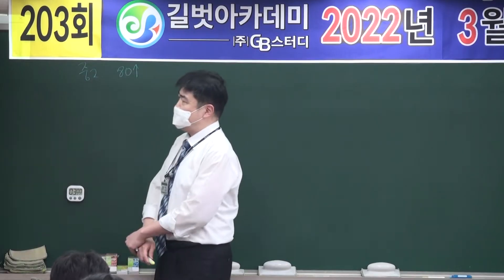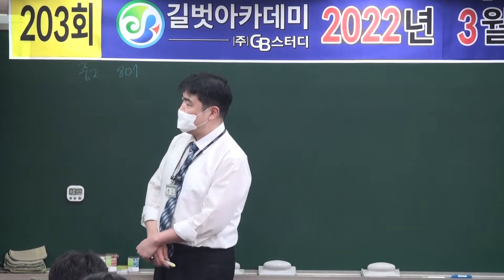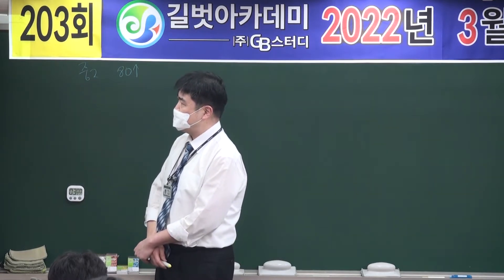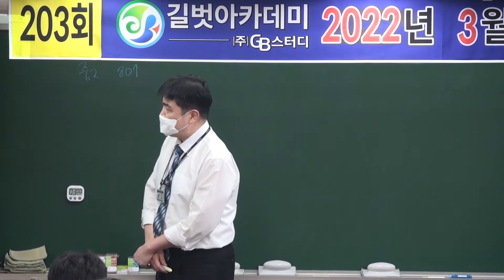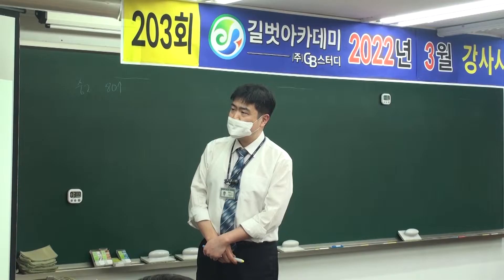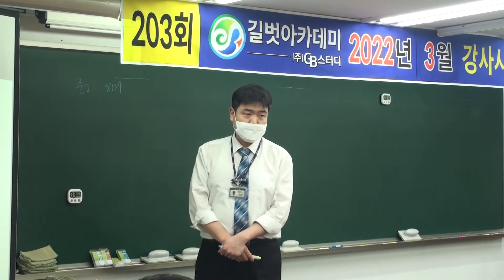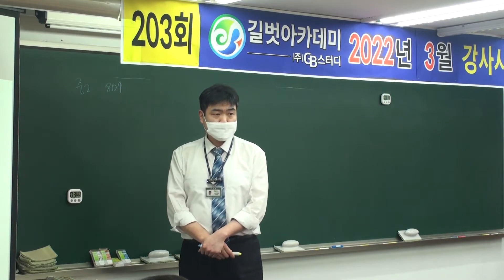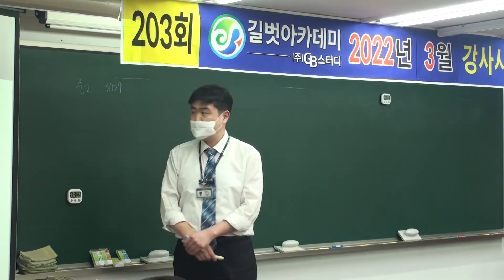자 이제 문제 풀 때 처음에 기약분수가 무엇인지, 그리고 반올림 해서 어떤 숫자가 나왔을 때 특징이 무엇인지 두 가지 체크포인트를 살펴보고 가겠습니다.